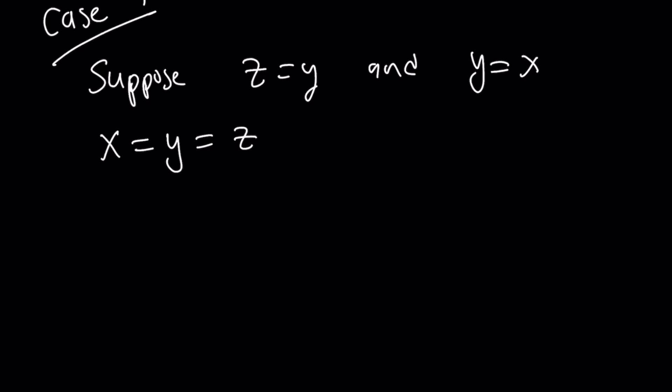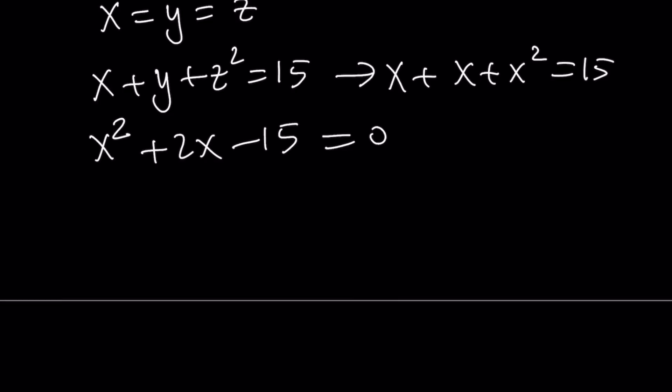So I can replace all the variables with x then. Consider the first equation, for example. And it doesn't matter which one you use. We can just go ahead and replace everything with x. And then we get a quadratic equation, which is x squared plus 2x minus 15 equals zero. And we can factor this easily. x minus 3 times x plus 5 equals zero. And now from here we get x equals 3 or x equals negative 5.